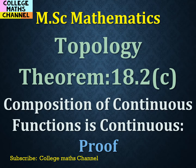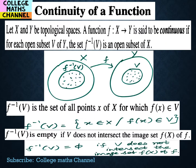Composition of Continuous Functions is Continuous — Proof. First, the continuity of a function definition. Let X and Y be topological spaces. A function f from X to Y is said to be continuous if for each open subset V of Y, the set f-inverse of V is an open subset of X. This is the definition.